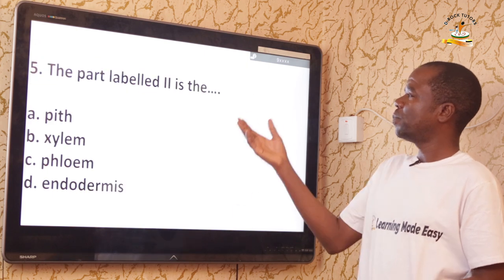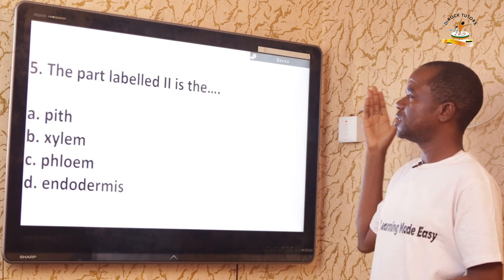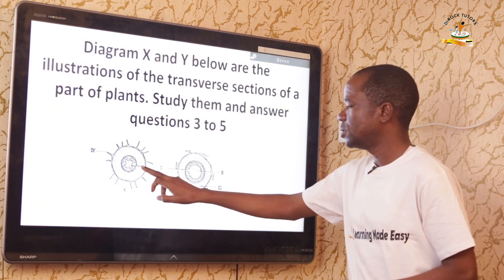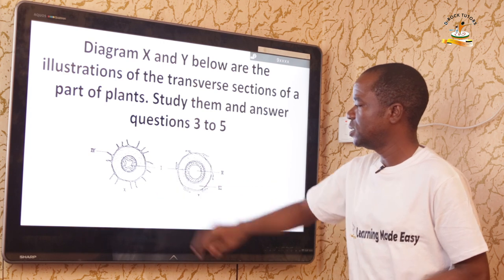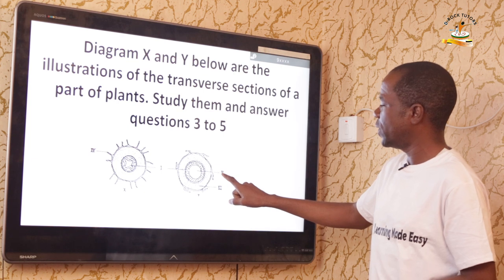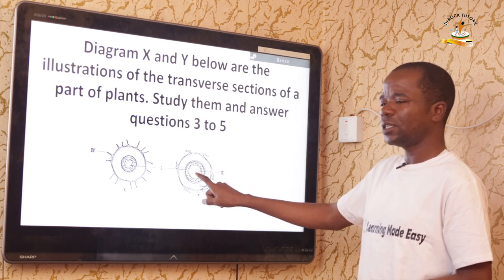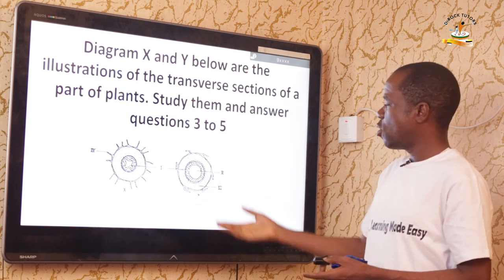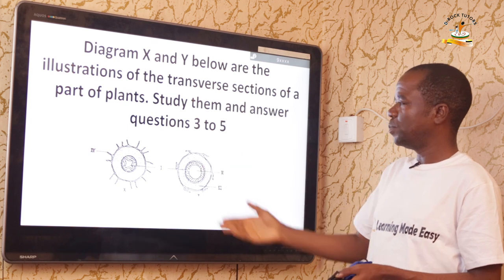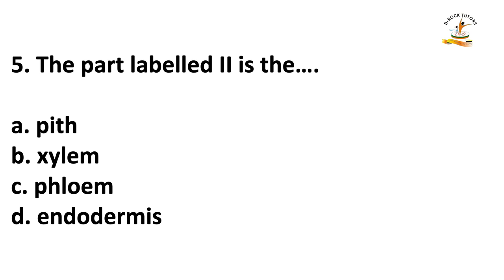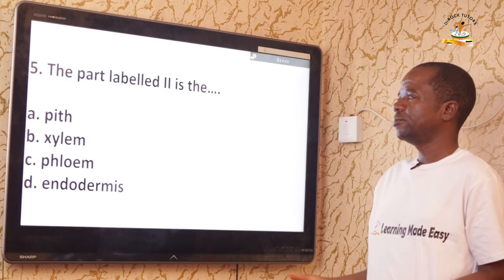Question five: The part labeled two is what? Roman numeral I is the xylem, and the part labeled two — at the very center of a monocotyledonous root — is referred to as the pith, spelled P-I-T-H. Looking at the options, the correct answer is option A — the pith.